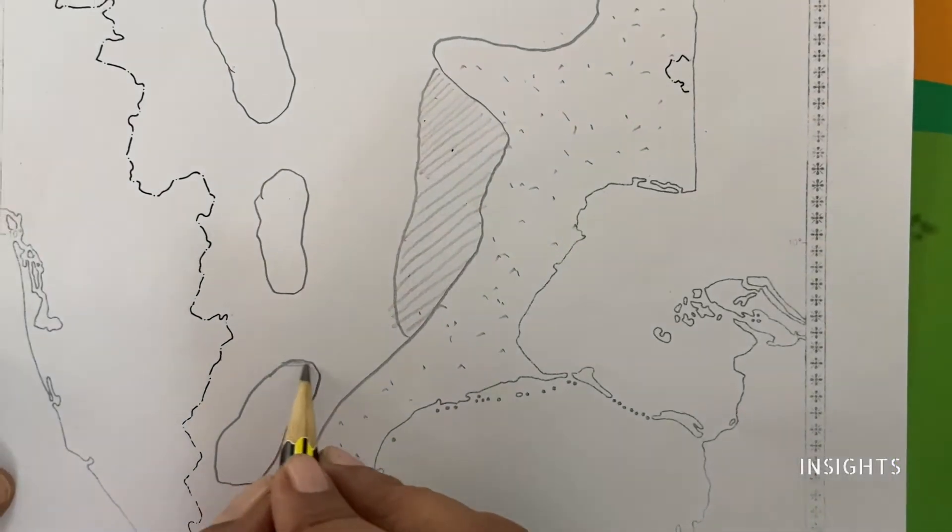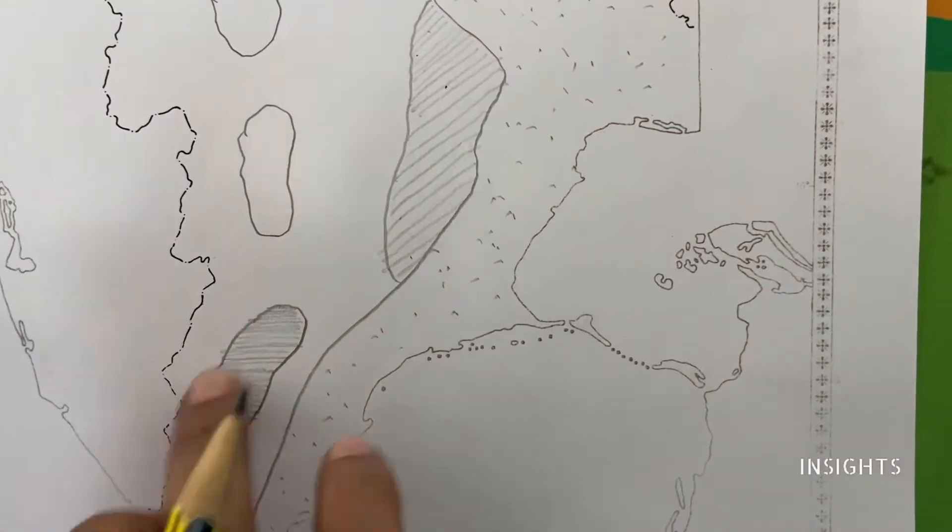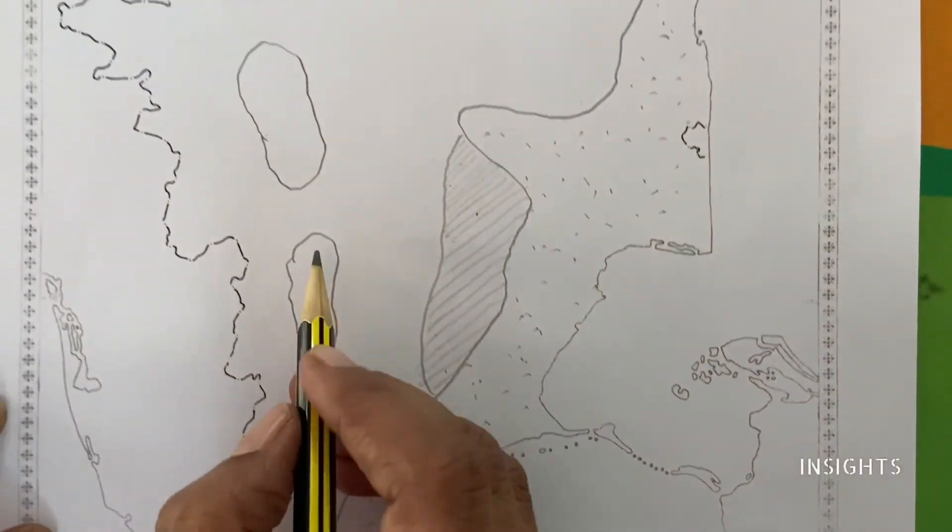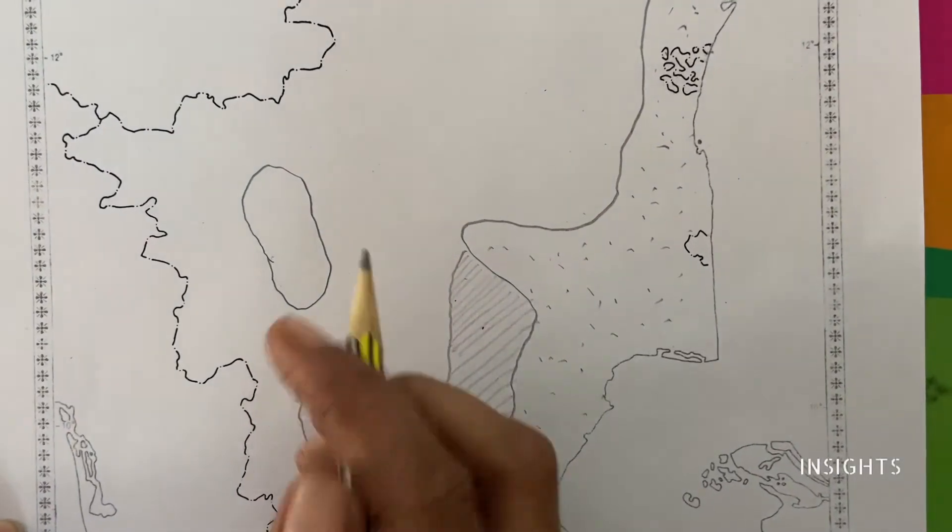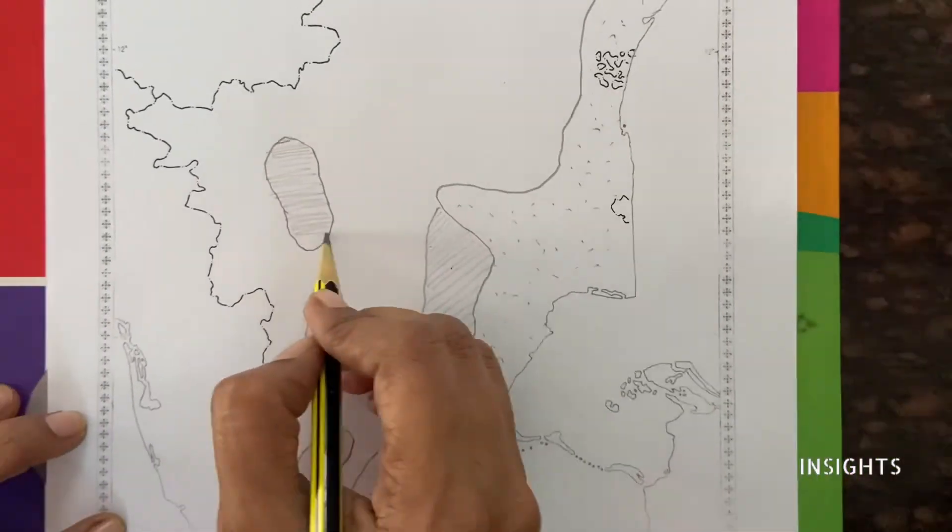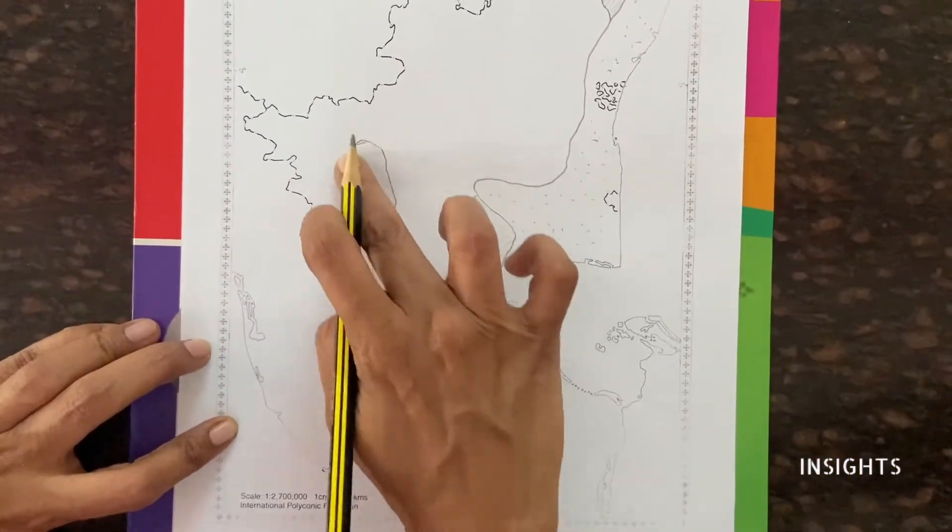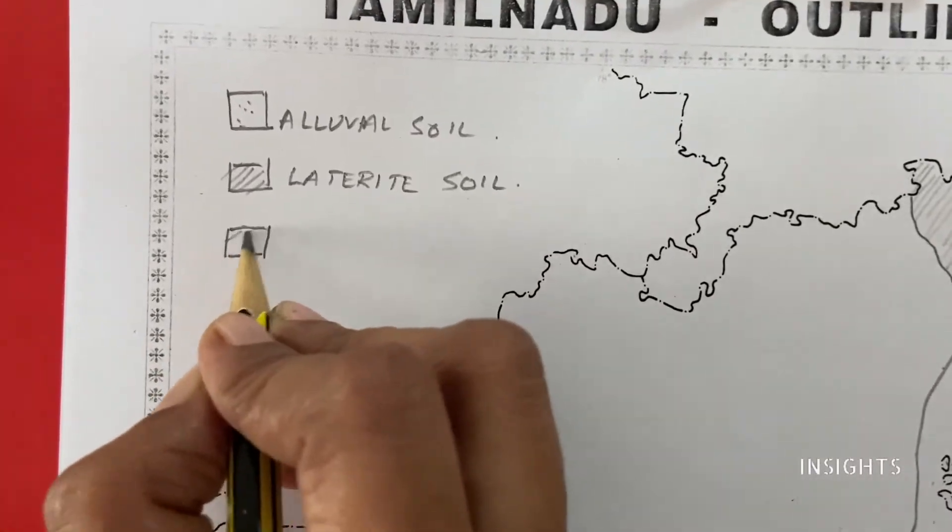This is the extent of black soil. Let us shade it fully and just rub it with our hands. In the Madurai area, we will mark the black soil. Let us go to the key and do the same.